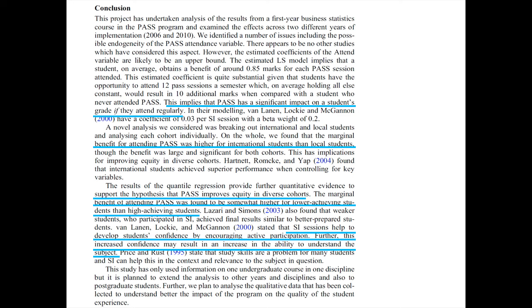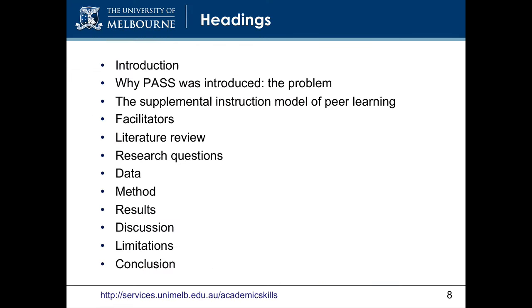The next step is to skim through the rest of the text, looking at headings, subheadings, diagrams, graphs, charts, illustrations and their captions, as this tells us the structure of the paper. Here are the section headings from this paper. They provide a framework to help us focus on the main ideas. As we're looking for a general overview, you might want to skip the detail normally found in the data, method and result sections, and focus more on the discussion and limitations. The final step in skimming would be to read the first and last sentence in each paragraph, which would most likely contain the main points.